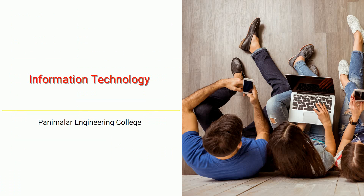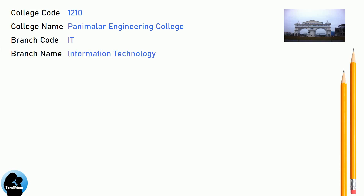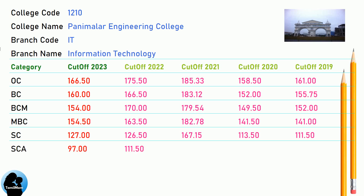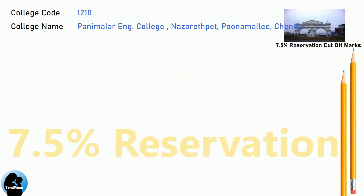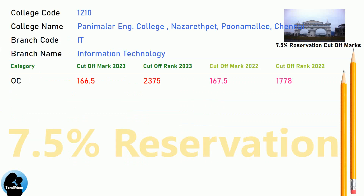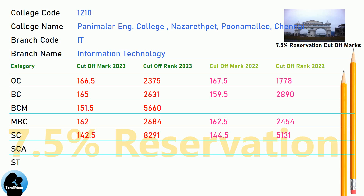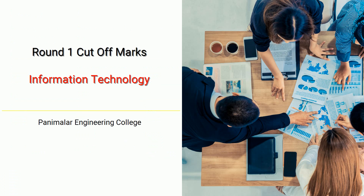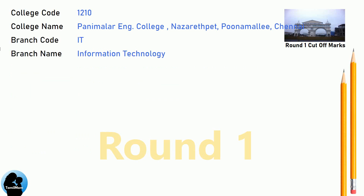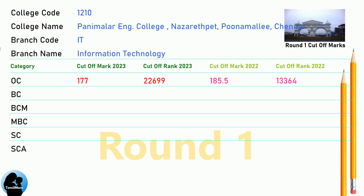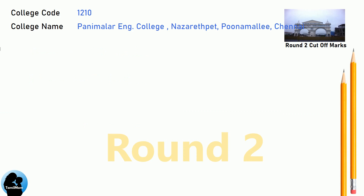DNA Cut-off for Panimalar Engineering College in Information Technology. DNA 7.5 Reservation Cut-off for Panimalar Engineering College in Information Technology. DNA Round 1 Cut-off for Panimalar Engineering College in Information Technology. DNA Round 2 Cut-off for Panimalar Engineering College in Information Technology.